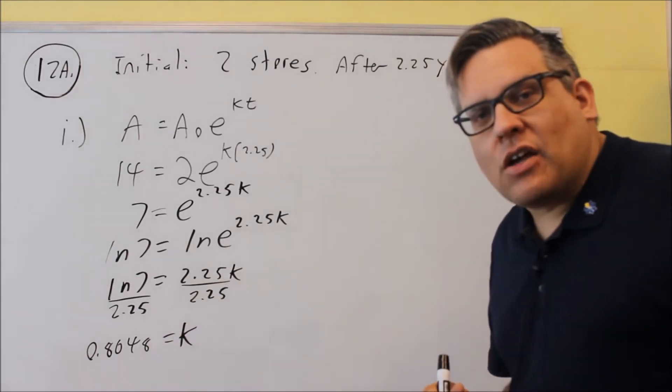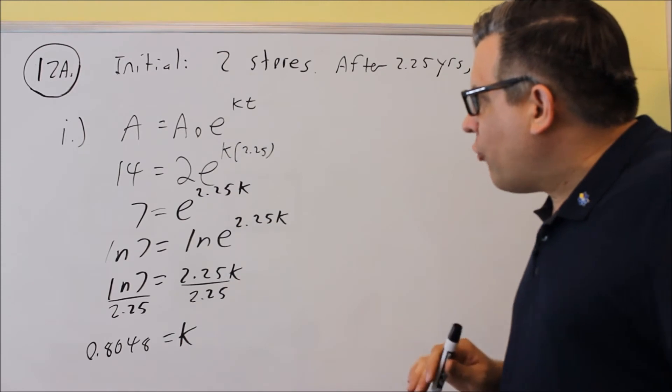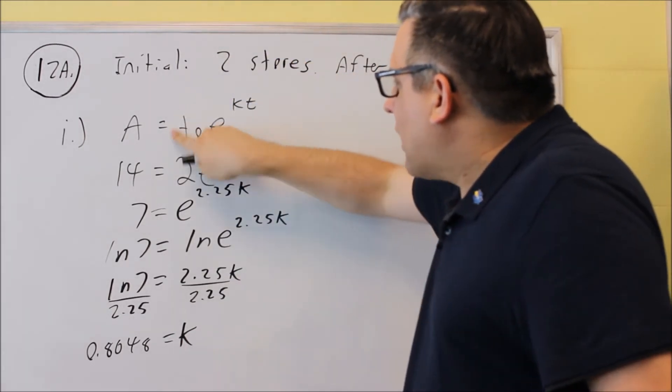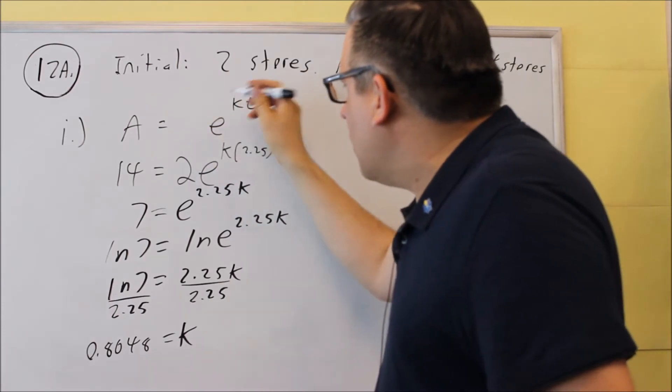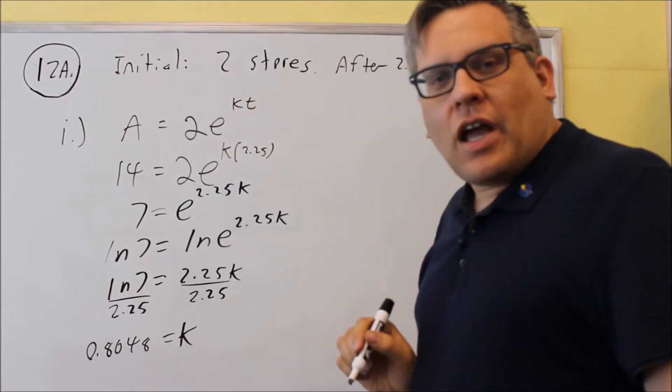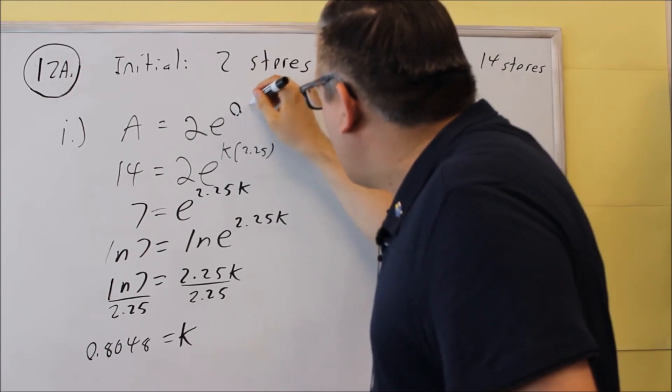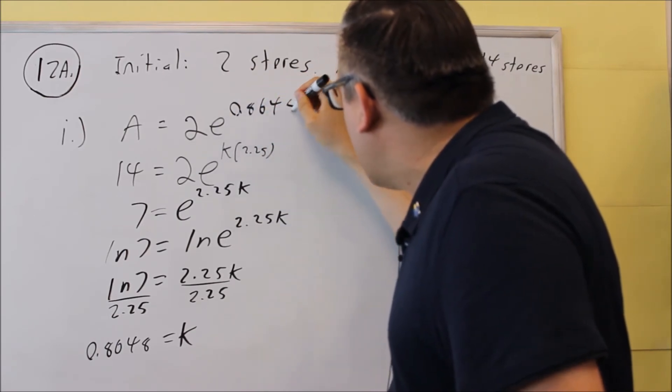If you want the growth formula for it, then you're going to put the values back into this general one. So that started out at 2, and then the k value, we can put that in here. So 0.8648t,